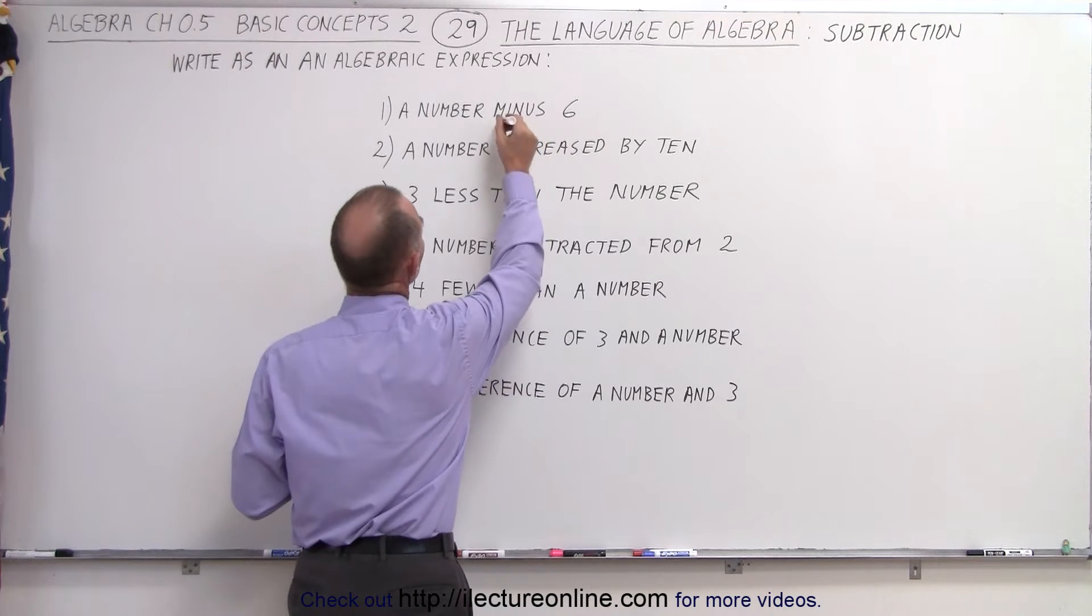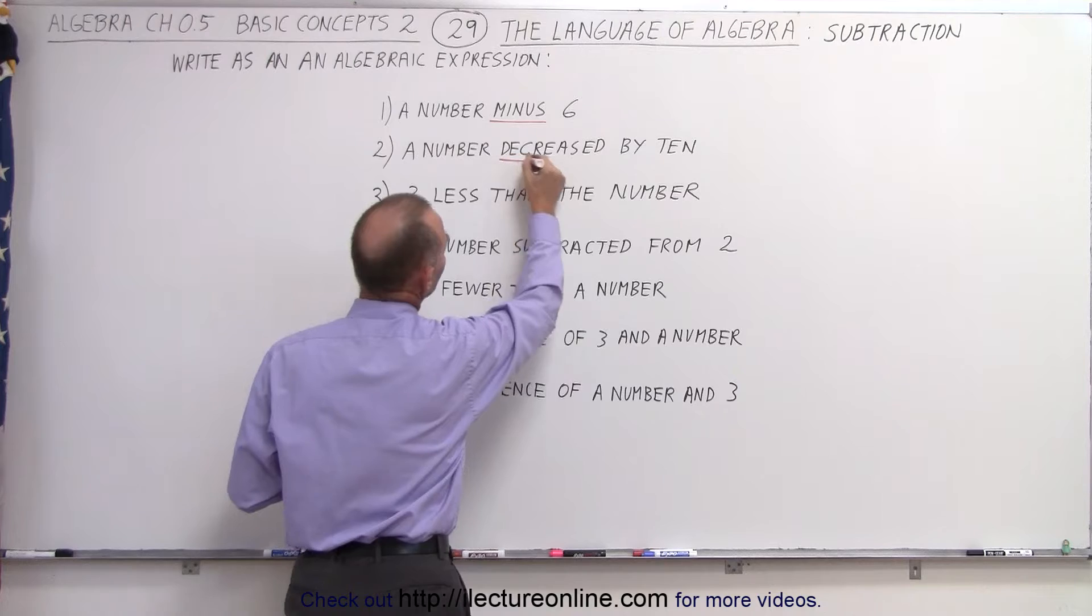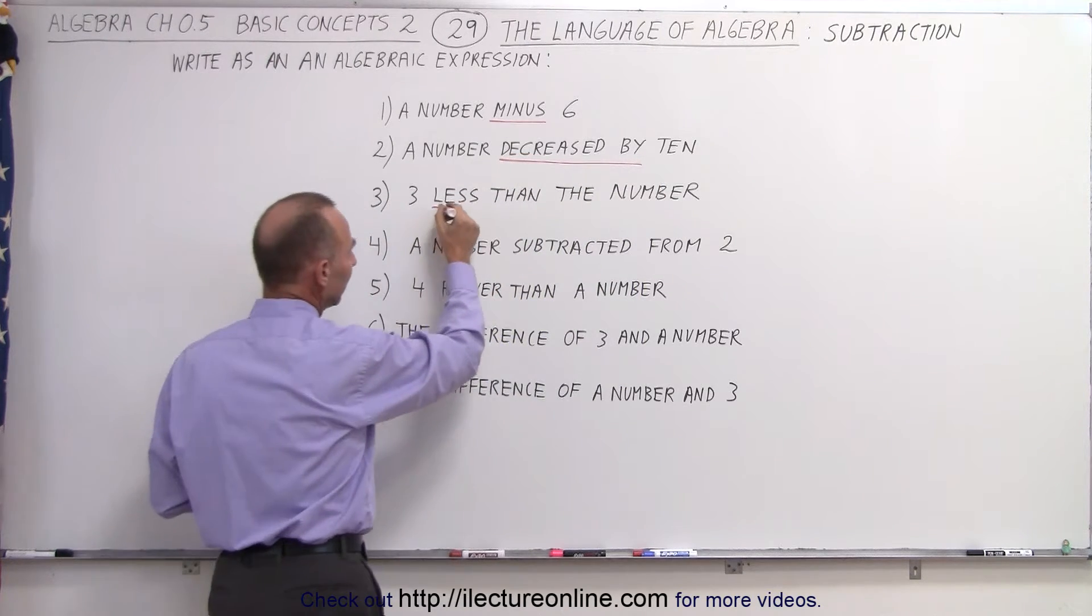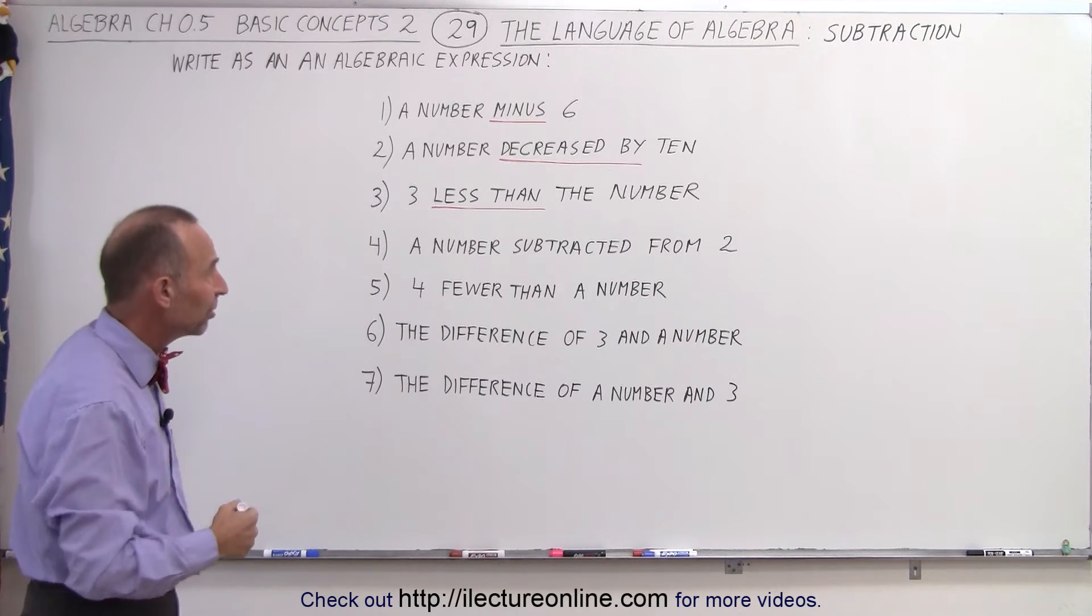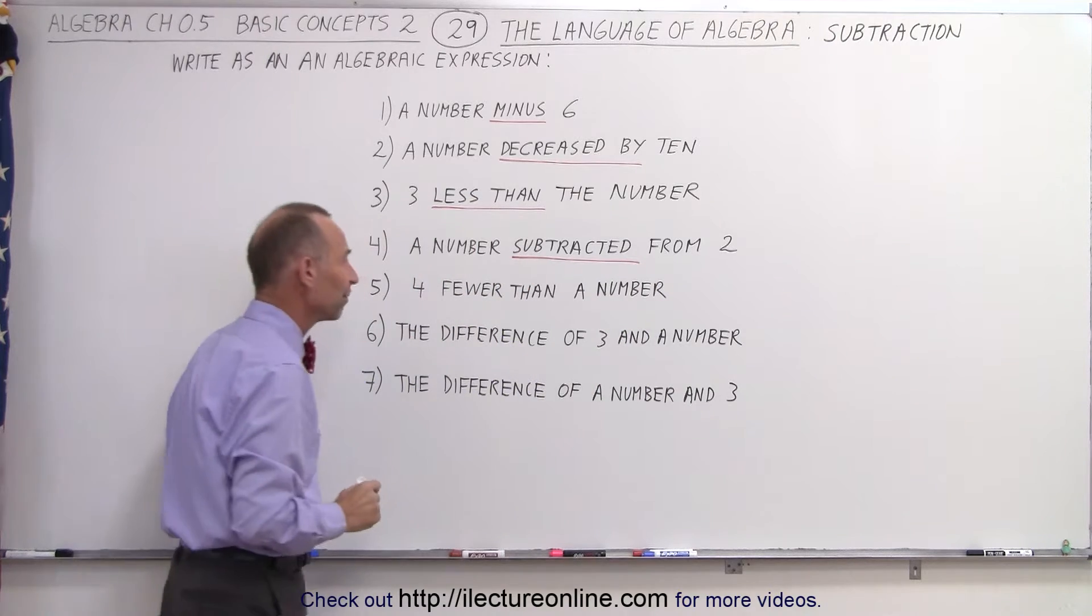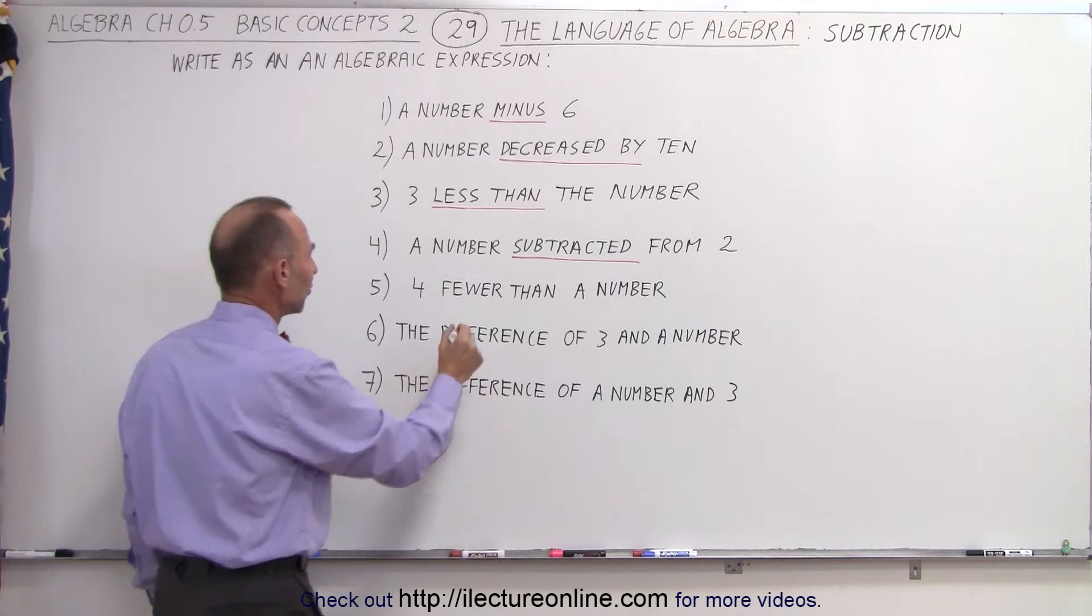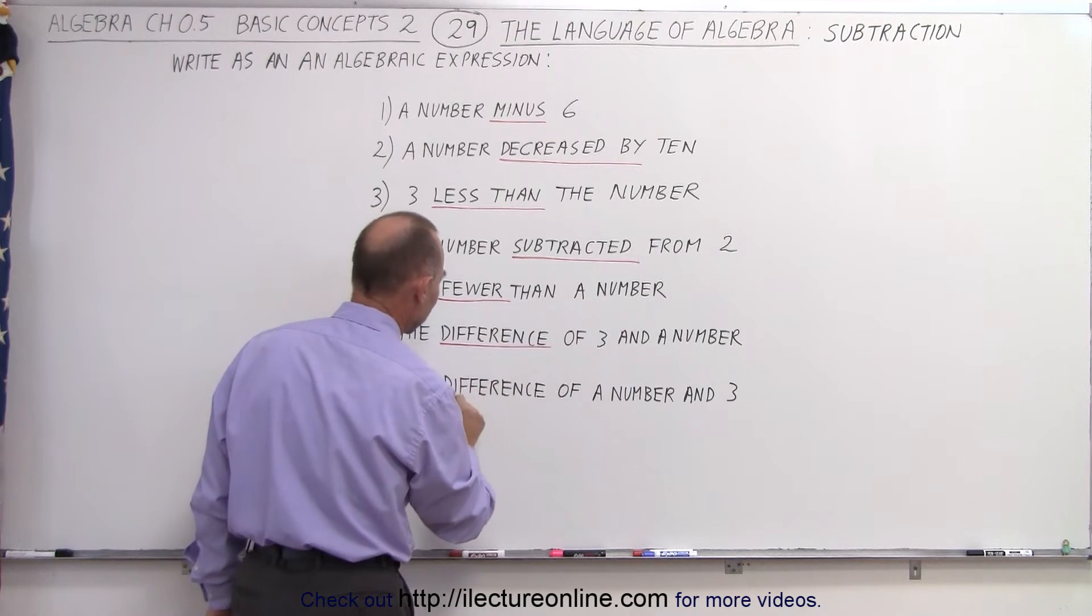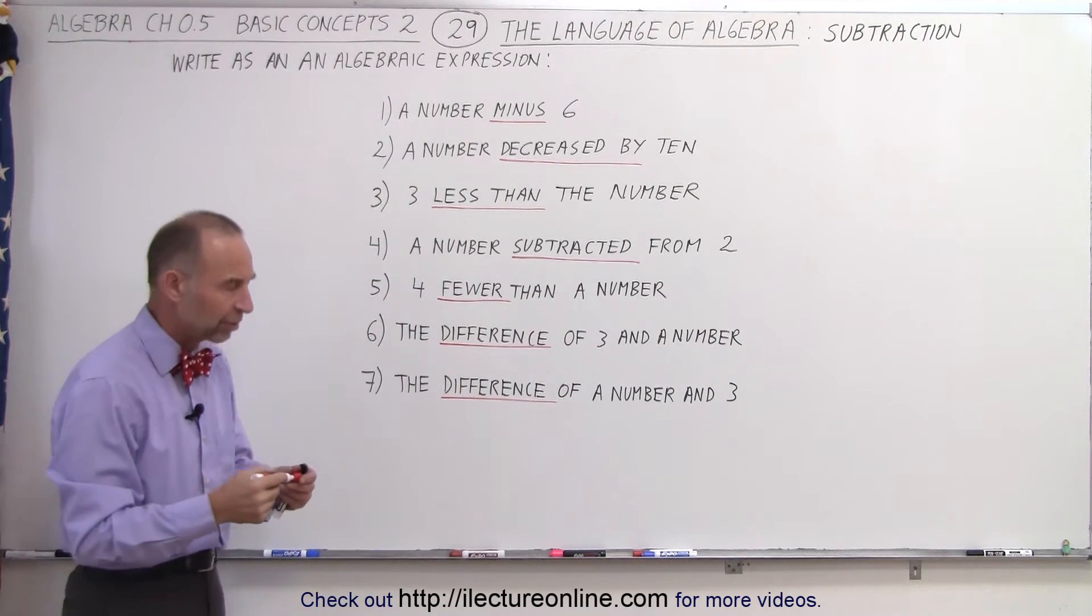When we see the number minus, that indicates subtraction. Decreased by would also indicate subtraction. Less than is another way that indicates subtraction, and of course if you see the number subtracted, that makes it quite obvious. Fewer than indicates subtraction, and the difference also is another way of indicating subtraction because the difference is actually the result of a subtraction.